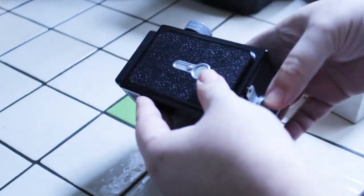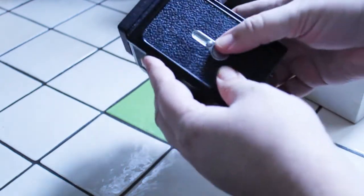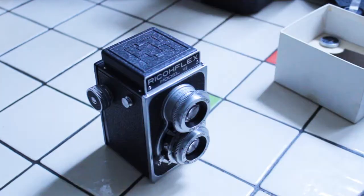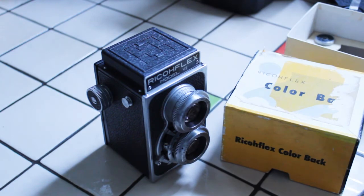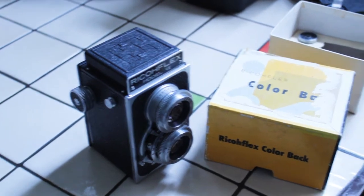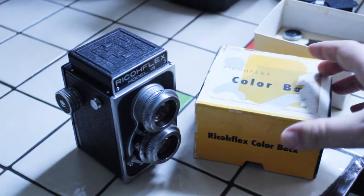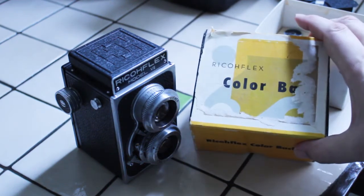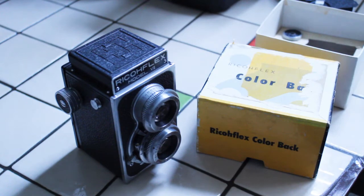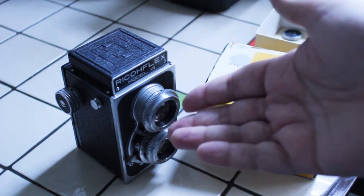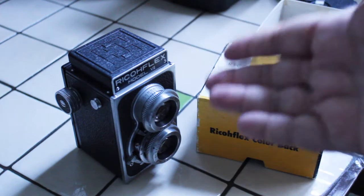And then that's it. So basically I would have it all loaded and it would be ready to take pictures on 35 millimeter film, just like that. So as you can see, it was a very inventive and creative way that Ricoflex came up with for adapting their cameras to take 35 millimeter film. They just came up with this simple device called the color back, and you'd be able to use either black and white or color 35 millimeter film in your camera.